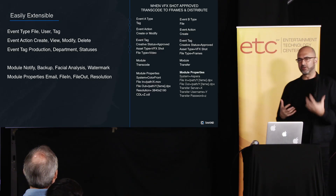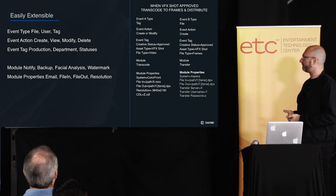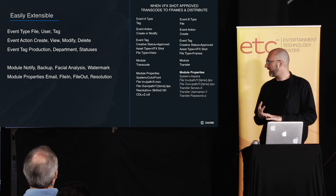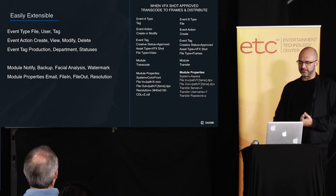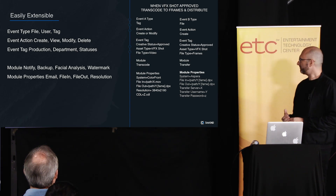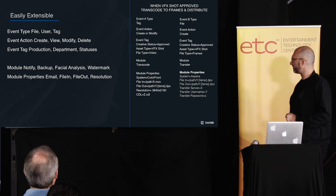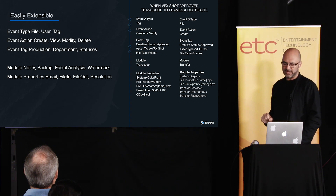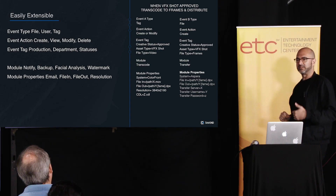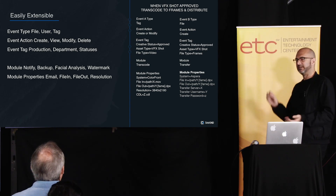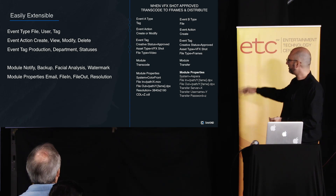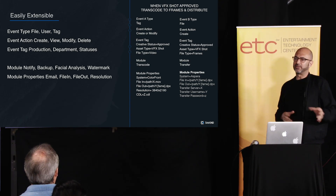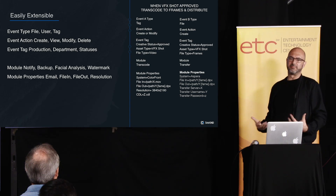If we want to programmatically extend this, we have an event layer. The event is broken down into event type, an action, a set of tags connected to a module with a set of properties. In this example on the right, as a VFX shot becomes approved, I might connect it to the module Color Front with these set of properties. Then I have a second event connected to that primary event that says, when I see these frames being written out, now orchestrate a transfer with a sparer to this path.